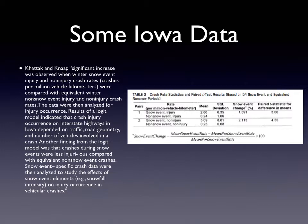Generally safety is worse. The rate of snow event injury crashes per million vehicle kilometers is 2.86 in contrast with non-snow event injury crashes which is 0.24. So it's about 10 times as many crashes. Another estimate was 20 times as many crashes. So 10 to 20 times as many crashes.